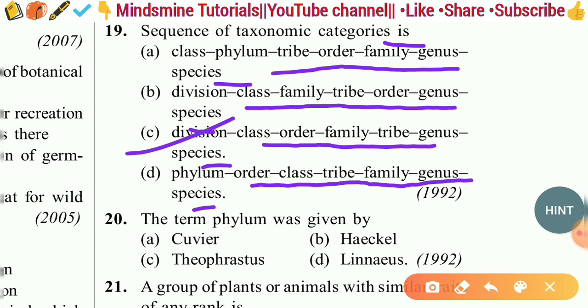Question twenty: The term 'phylum' was given by — Cuvier, Theophrastus, Haeckel, or Linnaeus? The correct answer is option A — Cuvier introduced the term phylum.